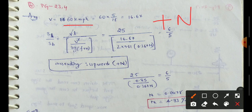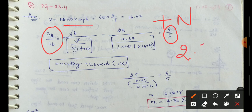The ratio of lag distance to brake distance is 6 is to 5. Given data: lag distance to brake distance value is 6 is to 5. Considering total reaction time of driver is 2.5 seconds. The coefficient of longitudinal friction is 0.36.